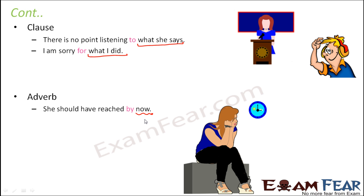There is no limitation that the object must always be a noun. Many students assume that since prepositions are placed before nouns, the object must always be a noun. But in many sentences, prepositions are placed before clauses, adverbs, or pronouns. For example: 'Your carelessness can't continue forever.' Here 'for' is the preposition and 'ever' acts as the object, and 'ever' here is also an adverb.